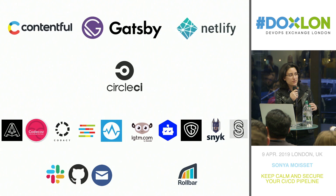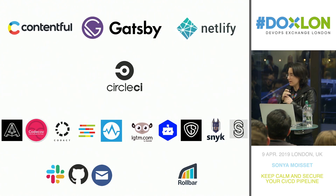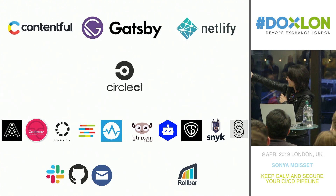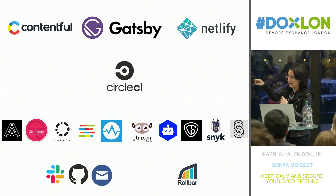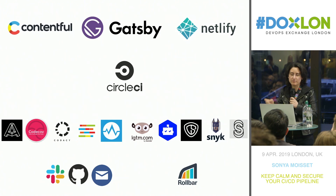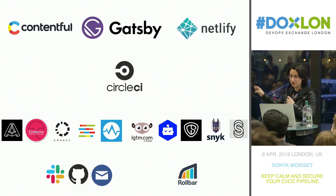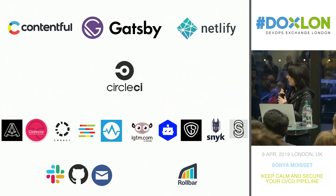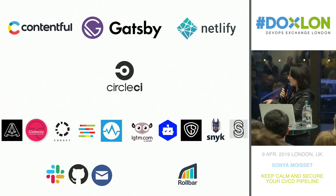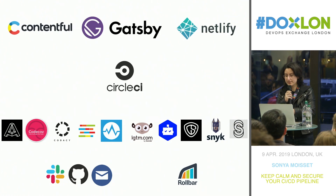We're doing continuous integration through CircleCI. We're using around a dozen tools in the middle — for accessibility, code quality, code review, and security. Everything is linked to Slack, GitHub, and email.